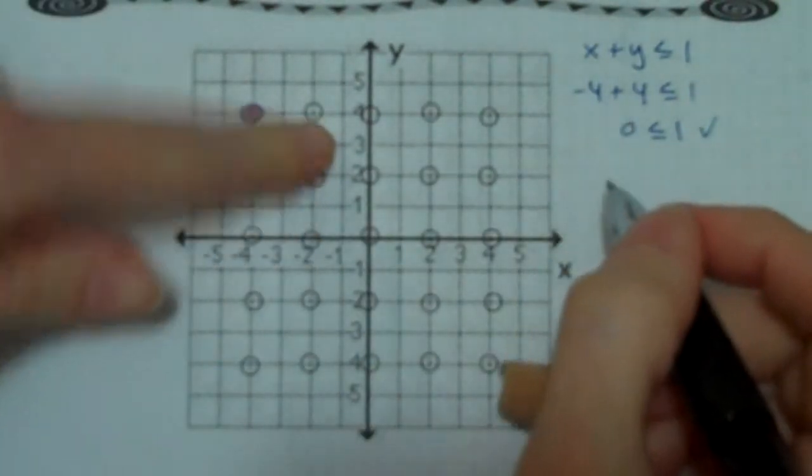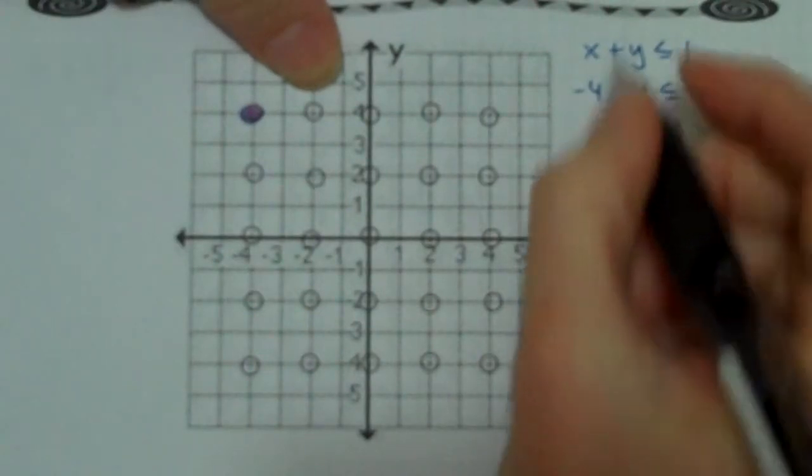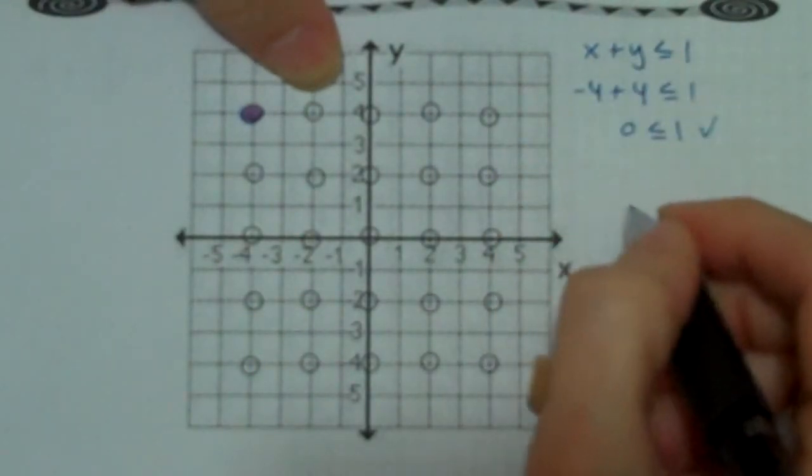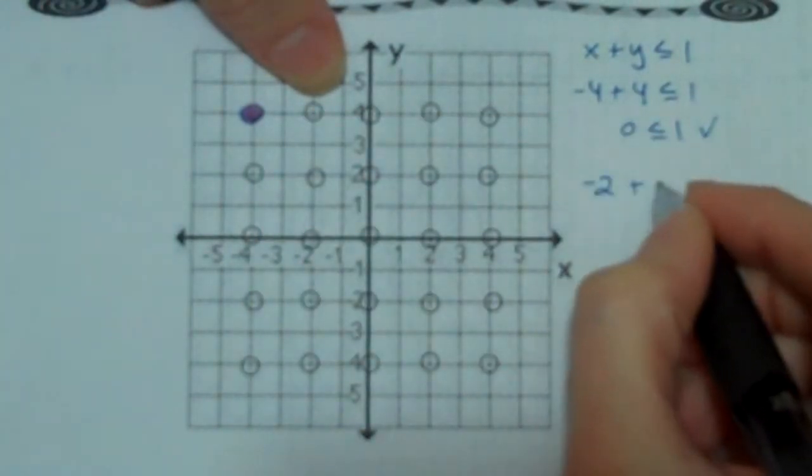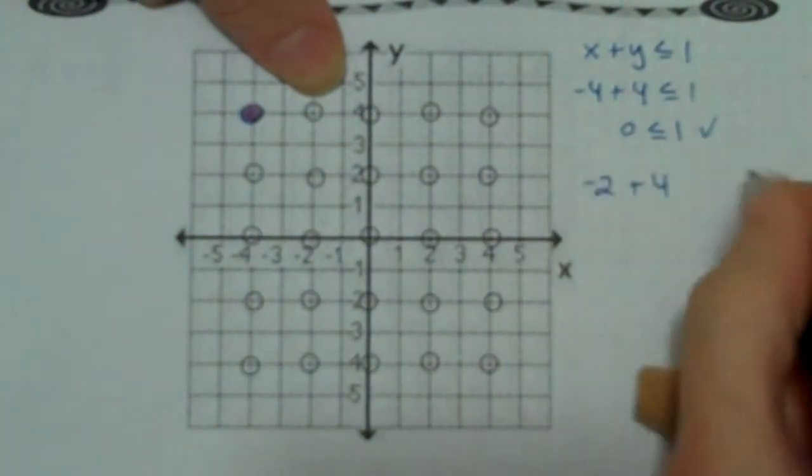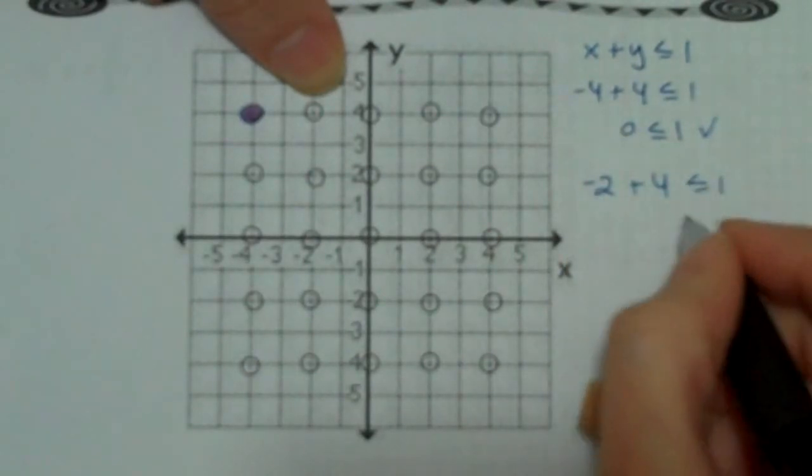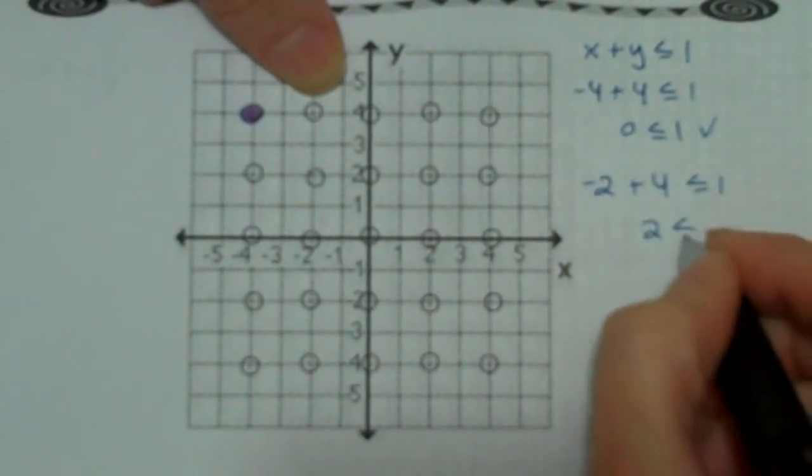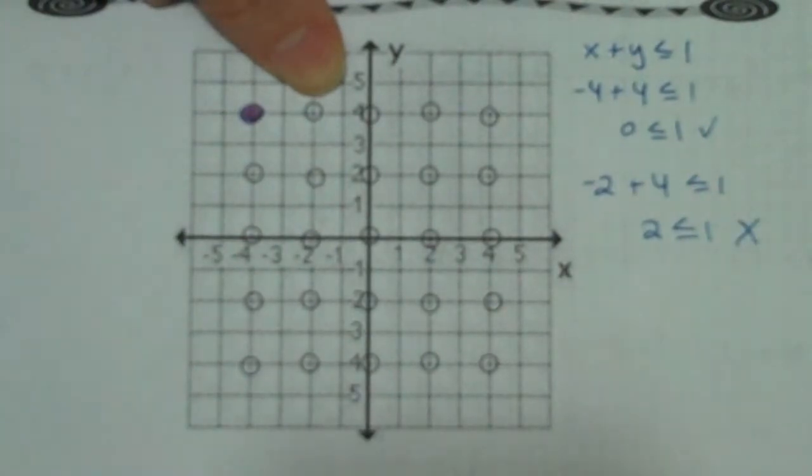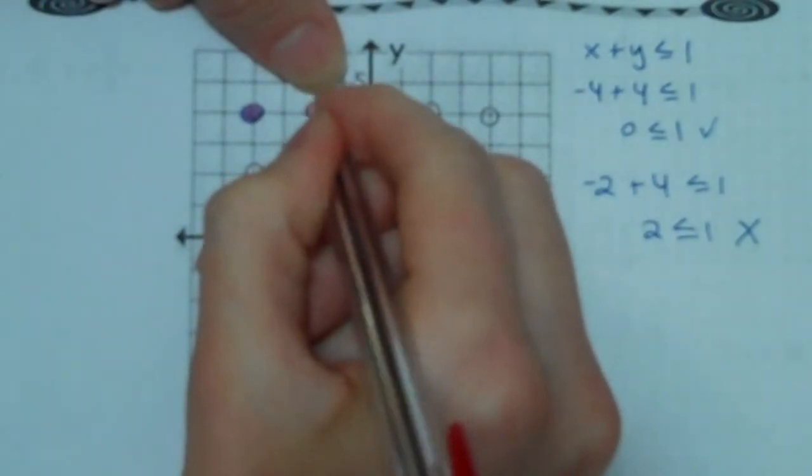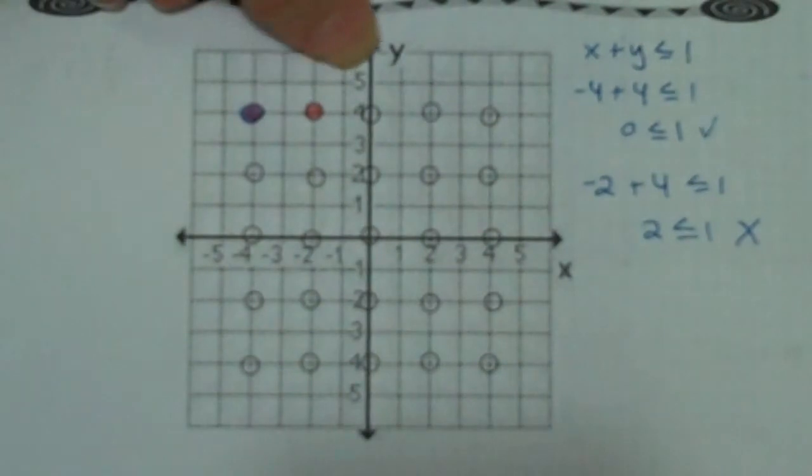So let's go over and do the next one now. My x value is negative 2 plus, and then my y value is still 4 because it's on that same horizontal line, is less than or equal to 1. Negative 2 plus 4 gives me a positive 2 is less than or equal to 1. That is not true. So this time, I'm going to use a different color, and I'll use red. And so we're just going to keep checking those dots until we get all of them filled in the correct way.